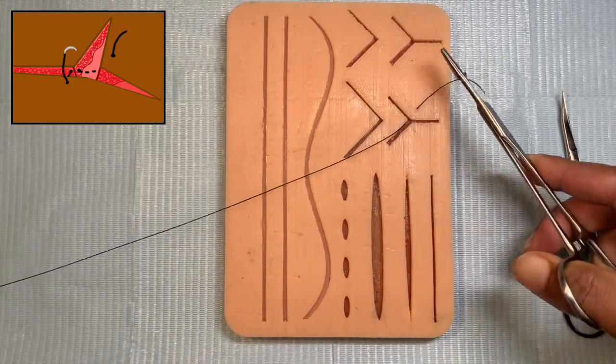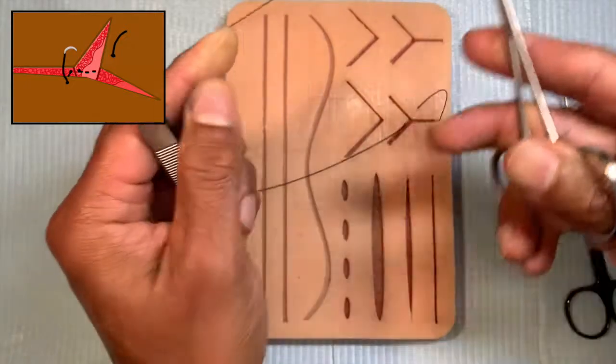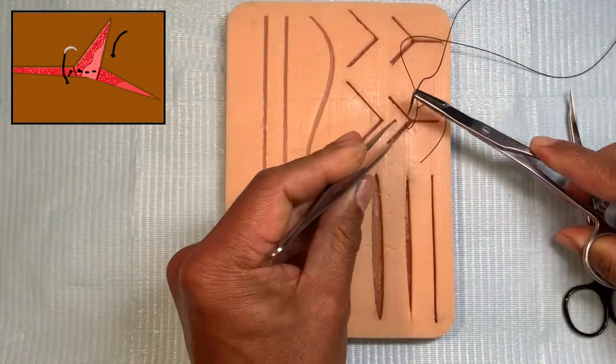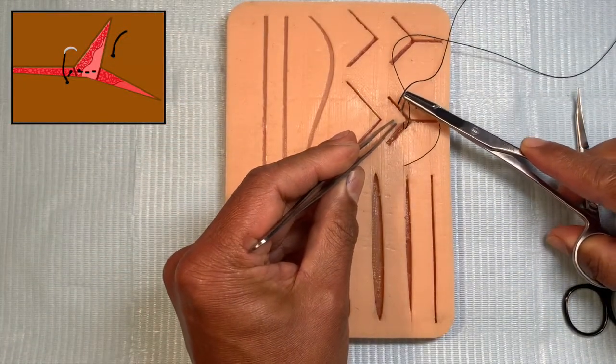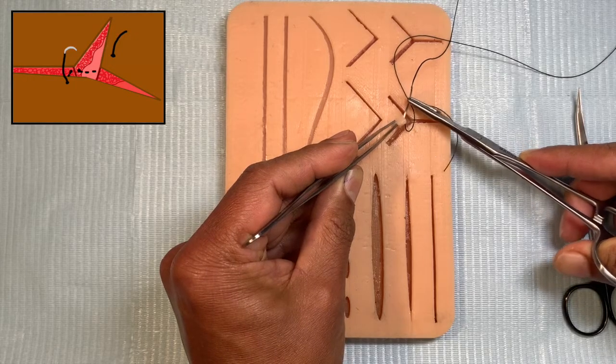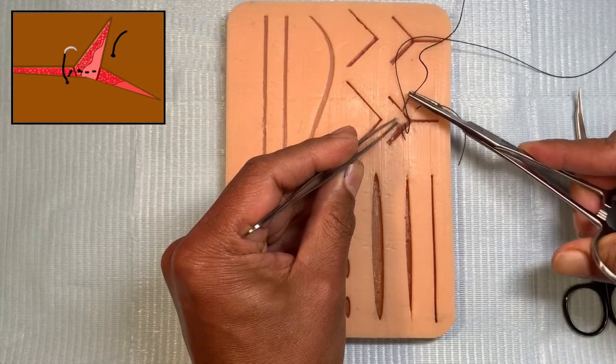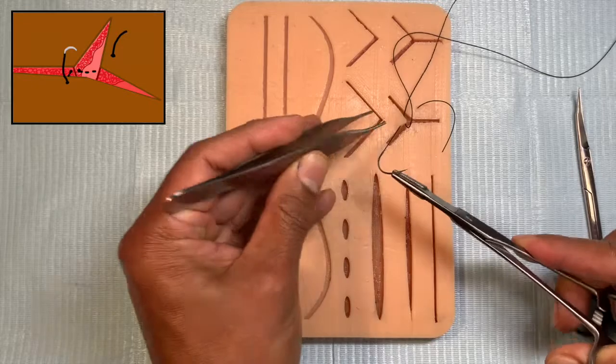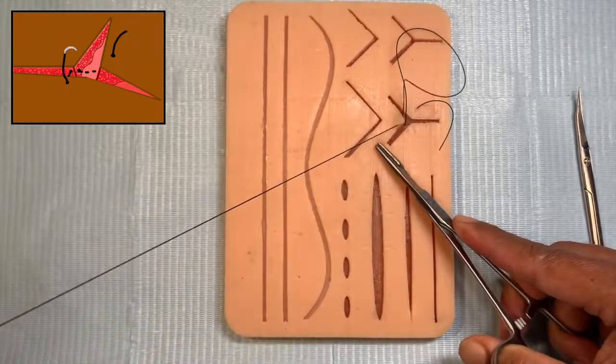Shorten the suture, don't keep this end too long. And then here what you want to do is bring it through the papillary dermis. So you take a good bite from the papillary dermis and come through that.